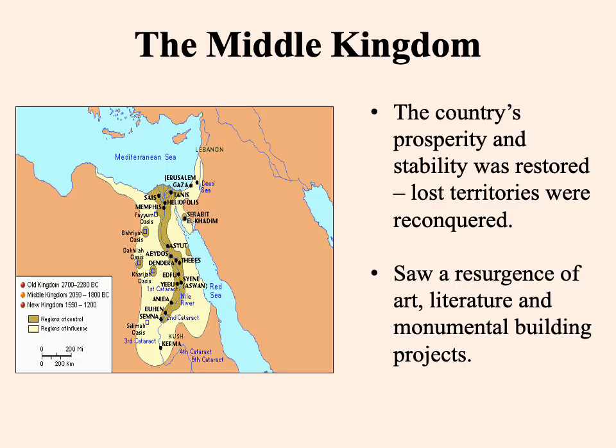The Middle Kingdom is often defined as a period during which Egyptian civilization really flourishes. It becomes more about intellectual and artistic achievements, but also promoting the welfare of the more common Egyptian people. Beginning with Mentuhotep, the country becomes much more prosperous and stable, different parts of Egypt are reunited, lost territories are reconquered. What defines it most is a resurgence of art, literature, monumental building projects, and a period where common folk are doing much better.